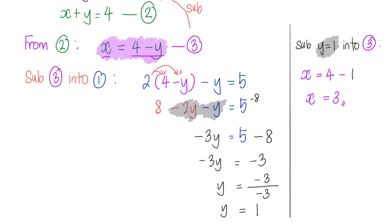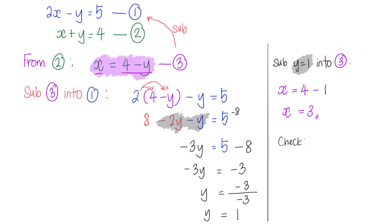Now for the last part, let's do a quick check just to make sure our answers are correct. We are going to substitute back the answers for x and y into equations one and two. So equation one is 2 times x, x is 3, minus y, y is 1. Does this give me back 5? Yes it does. Great.